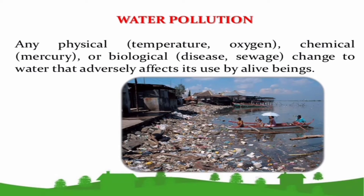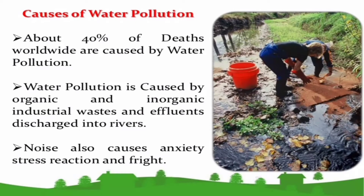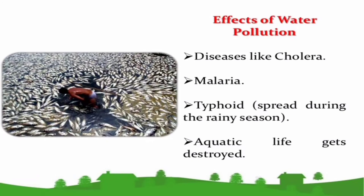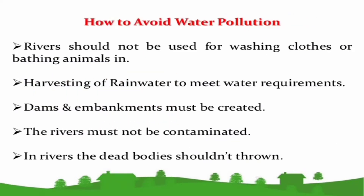Water pollution refers to the release of unwanted and harmful materials into the water bodies. Water pollution is caused by industrial waste, sewage and wastewater, accidental oil leaks, etc. Water pollution affects aquatic life as well as human life. Water pollution can be avoided by not washing clothes in rivers, making dams, and by not making rivers contaminated.